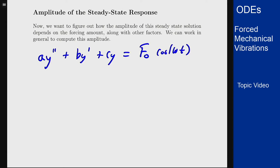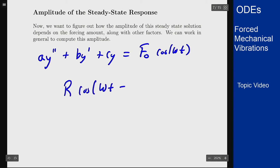I want to look at the steady-state response, which is the solution to the non-homogeneous equation, and I want to figure out what the coefficients A and B are going to be, and how that relates to finding the amplitude in the form r times cosine of omega t minus phi, which I know I will get by combining the sine and cosine functions from the undetermined coefficients approach.